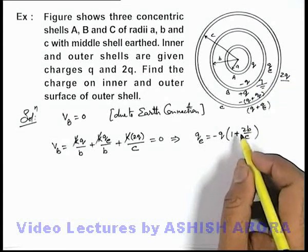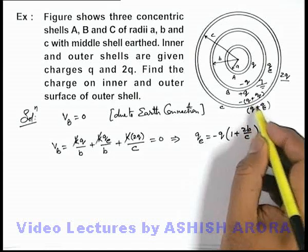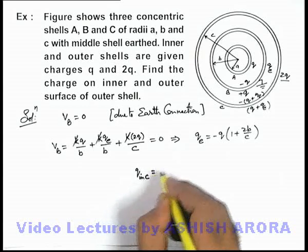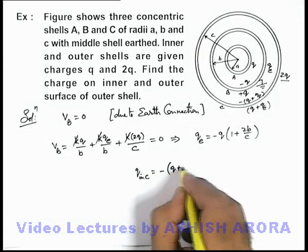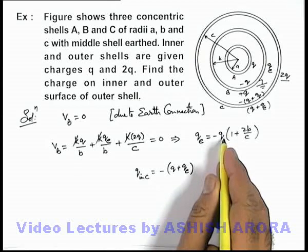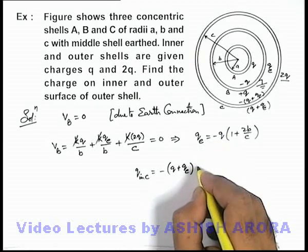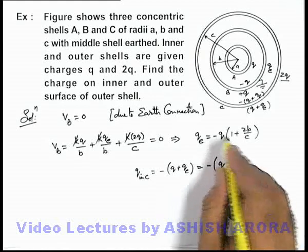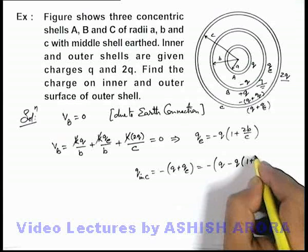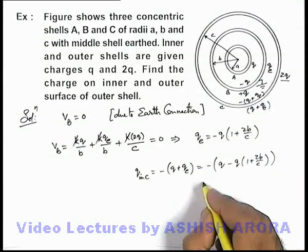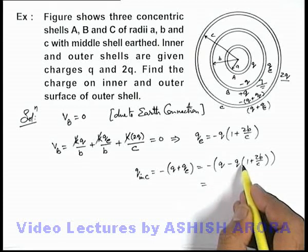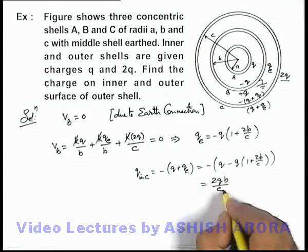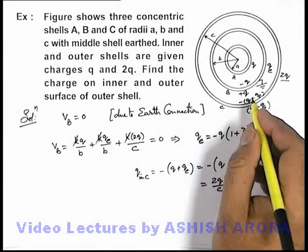Now let's write down the final charges on the inner and outer surfaces of shell C. The charge on the inner surface of shell C is −(q + qe). Substituting the value of qe = −q(1 + 2b/c), we get −[q + (−q(1 + 2b/c))]. Simplifying, the q terms cancel and the final result is +2qb/c, which is the positive charge on the inner surface of shell C.